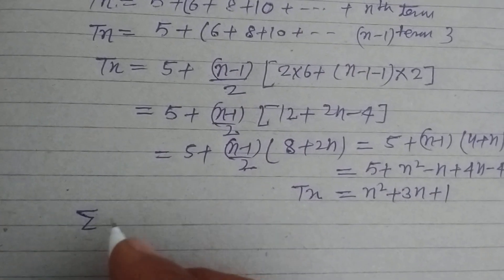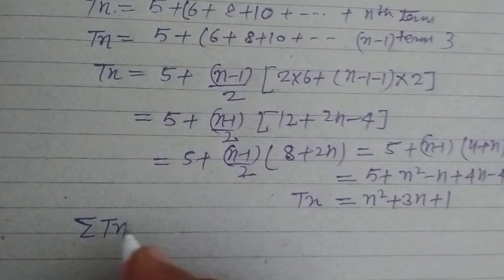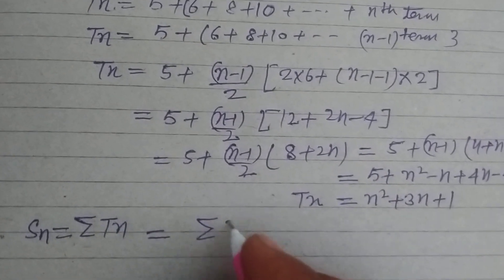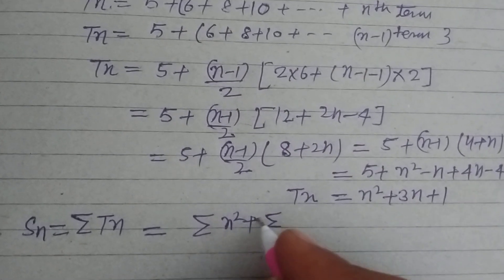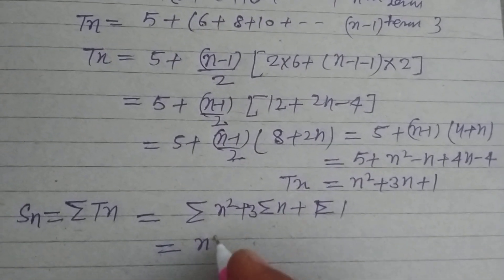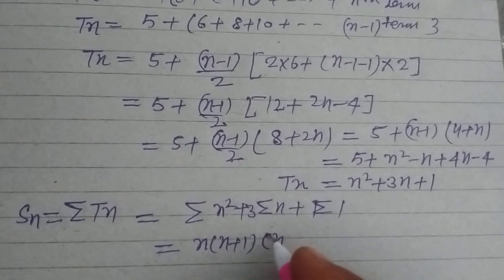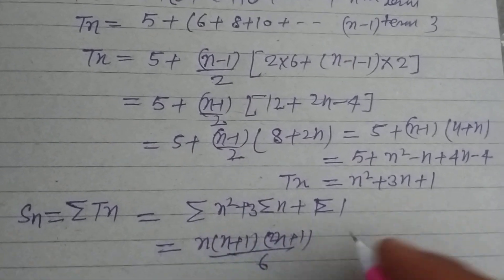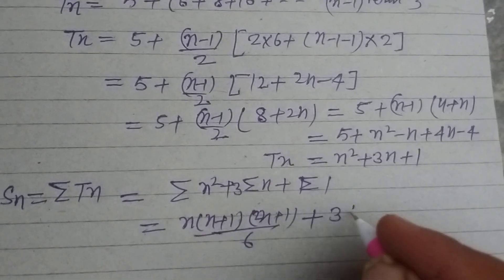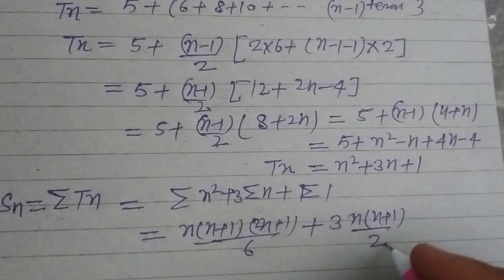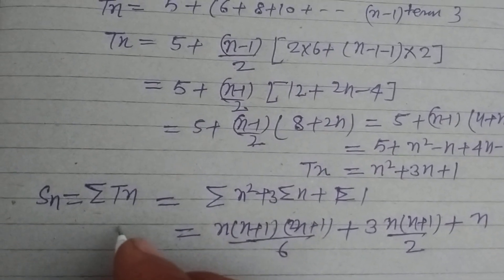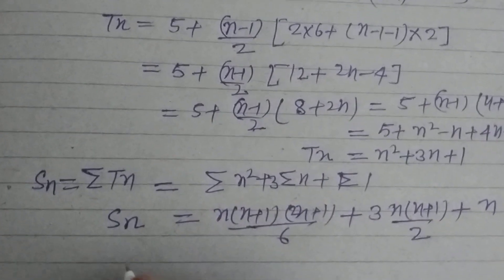So the TN term is N square plus 3N plus 1. Now sum of the series, sigma TN equals SN, so sigma N square plus sigma 3 times N plus sigma 1. N square is N into N plus 1 into 2N plus 1 by 6, plus 3 times sigma N is N into N plus 1 by 2, and sigma 1 is N.